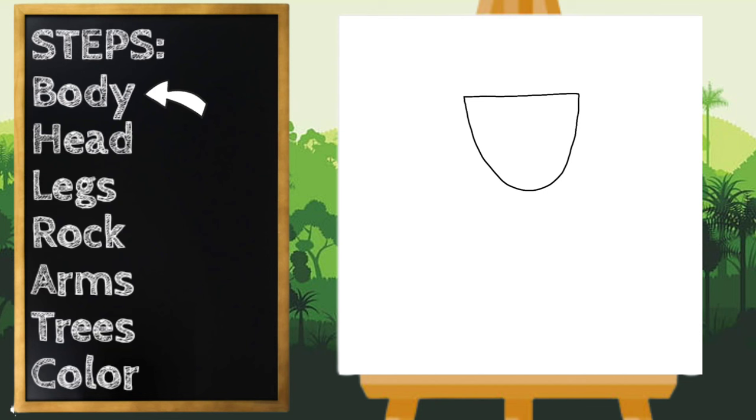All right, next let's draw Roz's head. So I'm going to start kind of on the left side and we're going to draw a line going up, over, and down. And Roz has two circles for eyes.